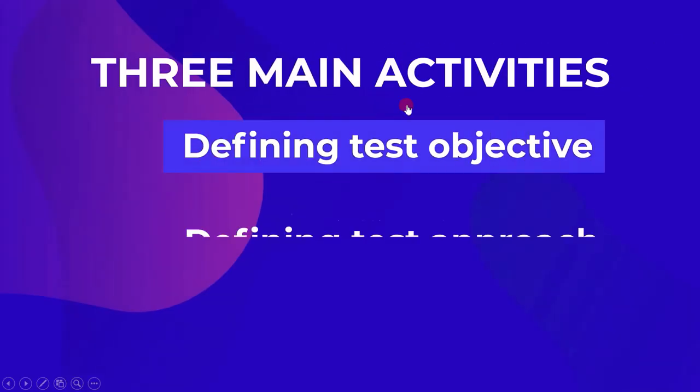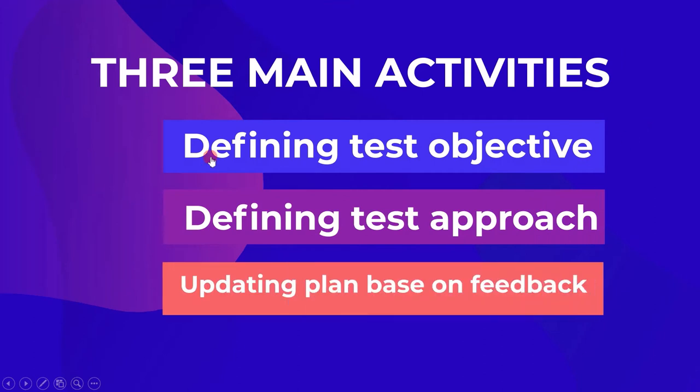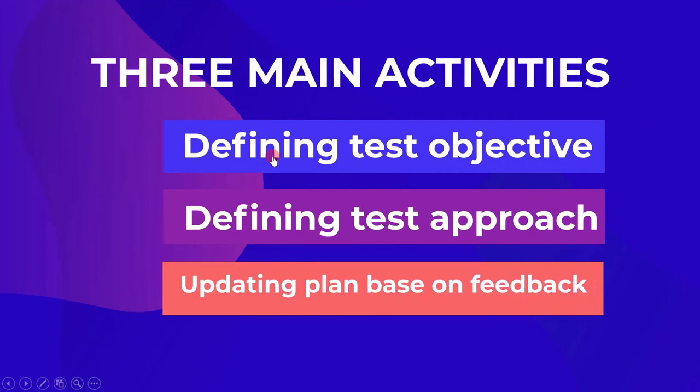Test planning involves 3 main activities: defining test objective, defining test approach, and updating plan based on feedback. Now let's cover these points one by one.